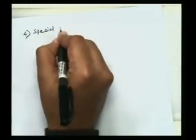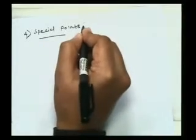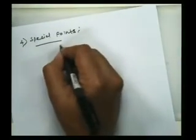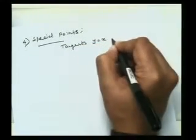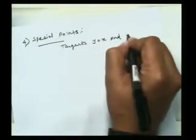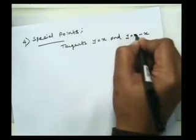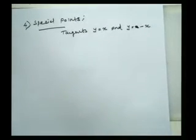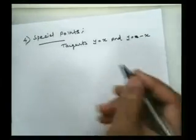For the special points: there are two tangents at the origin, y = x and y = −x. These two tangents are real and distinct. It means in this case the double point is called a node.